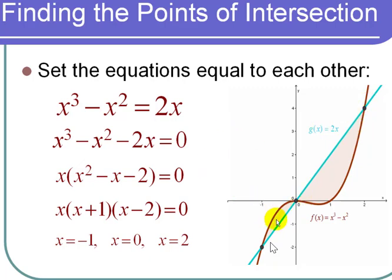Now since I have two regions here—this left region and this right region—the left region, notice the top curve is a cubic and the bottom curve is a line. The right region, the top curve is a line and the bottom curve is a cubic. I'm going to need to use two different integrals to find the total area.